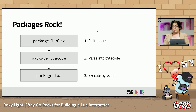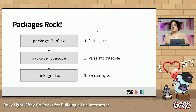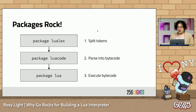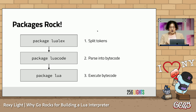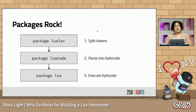Step one: read from an io.Reader and split into words — think of this like a streaming strings.Fields function. Step two: parse the tokens into bytecode, which is represented as a slice of Uint32. And step three: run that bytecode. Go packages rock to keep implementation details of each part of this process hidden from the other parts. I can even parse the bytecode without having an interpreter, which is something you can't do with PUC-Rio Lua.